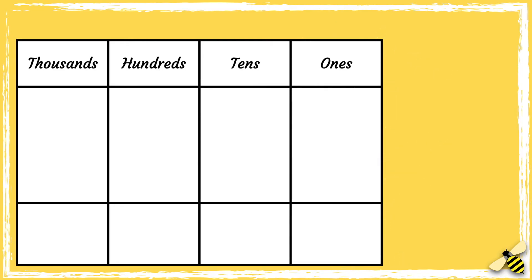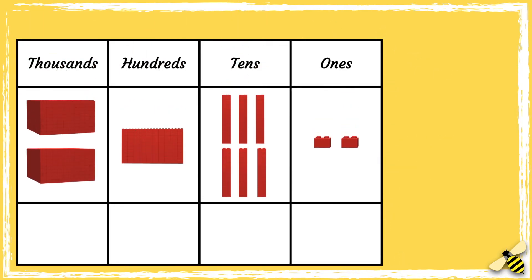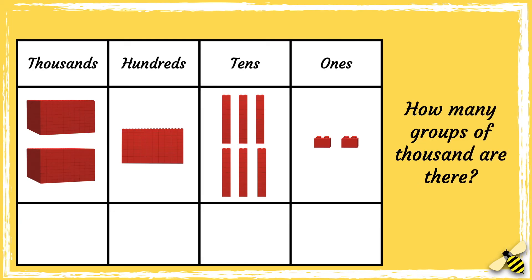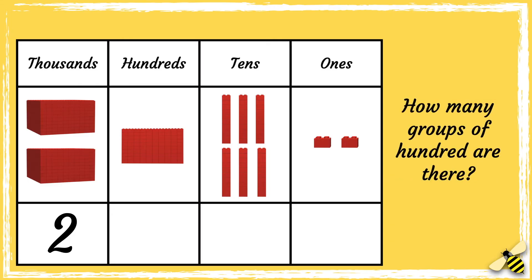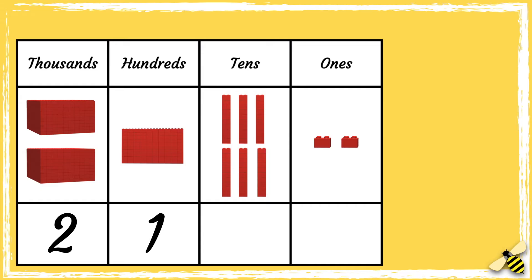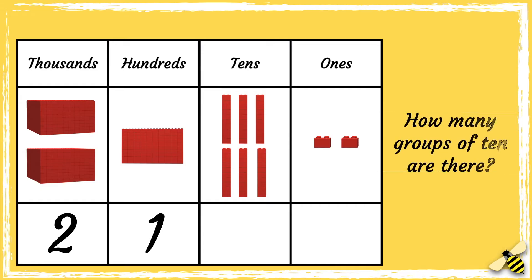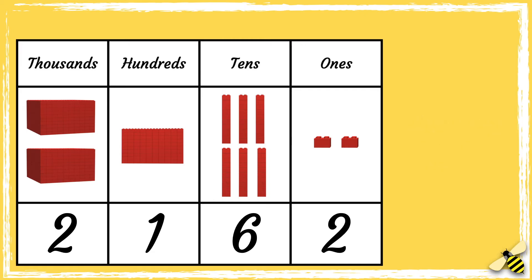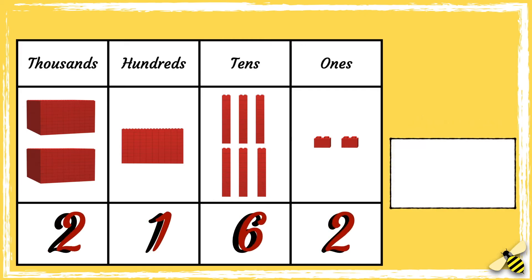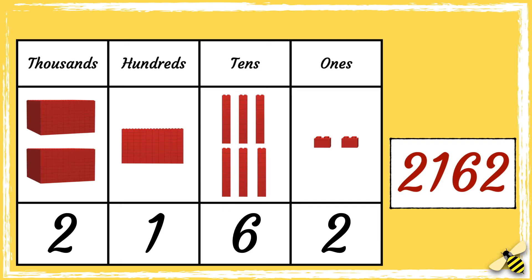Let's have a look at another number. What number is shown on the grid? How many thousands are there? There are two thousands. How many hundreds are there? There is one hundred. How many tens are there? There are six tens. And how many ones are there? There are two ones. So the number shown on the grid is two thousand one hundred and sixty-two.